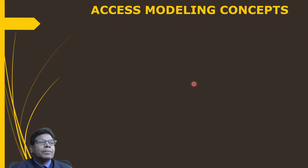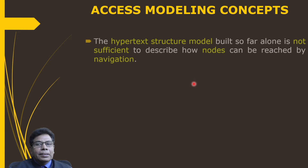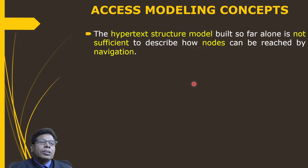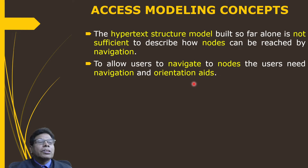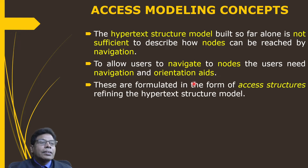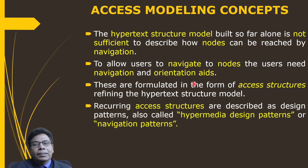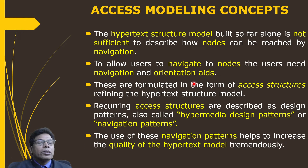The hypertext structure model alone is not sufficient to describe how nodes can be reached by navigation. To allow users to navigate to nodes, they need navigation and orientation aids. These are formulated as access structures defining the hypertext structure model. Recurring access structures are described as design patterns, also called hypermedia design patterns or navigation patterns, and their use helps to increase the quality of the hypertext model tremendously.